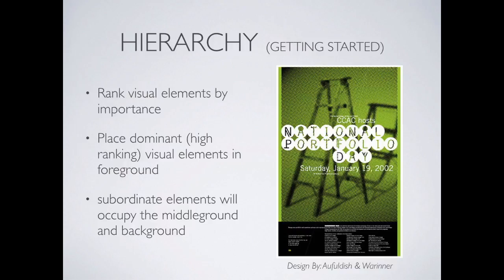The easiest way to get started is to quickly rank elements by importance. If we're doing a poster for a lecture series, what's the most important thing? It's a lecture series. Then what's next — maybe where it is, when it is, something like that, maybe who's speaking. You have to define what this hierarchy is. It can be as simple as a little bullet point list with numbers. Once we have those numbers, it's easy to start ranking the visual importance and make sure that matches up with your number system.